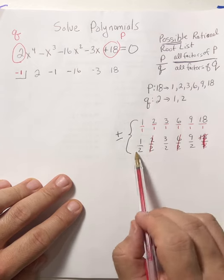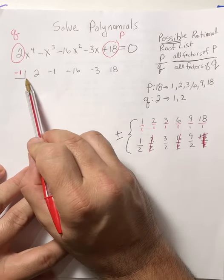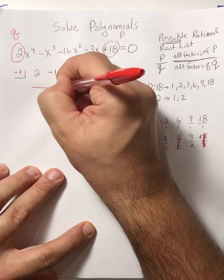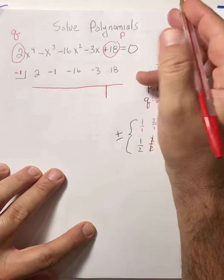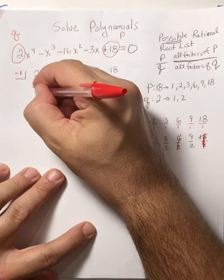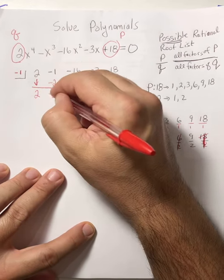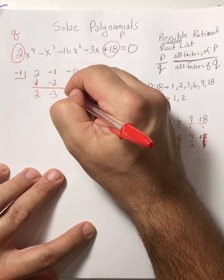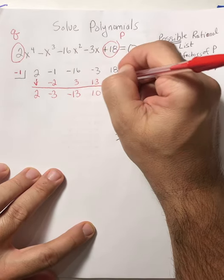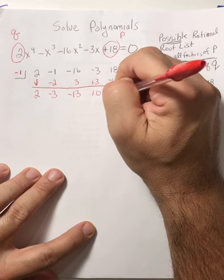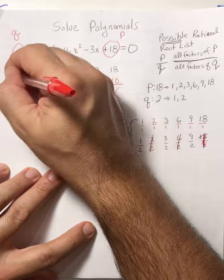I'll show you what happens with a fraction that works and one that doesn't. Let's try negative 1 first. We're literally doing synthetic division — remember, this spot here is the remainder; we want it to be 0. I drop the lead and start multiplying: negative 1 times 2 is negative 2, then we add. Negative 1 times negative 3 is 3, we add. Negative 1 times negative 13 is positive 13, we add. Negative 1 times 10 is negative 10. That's not 0, so negative 1 does not work.